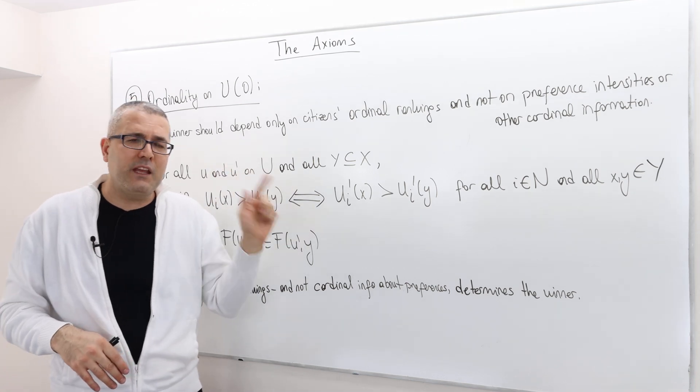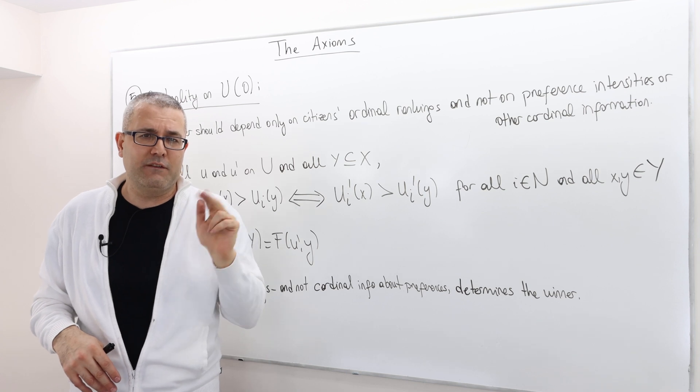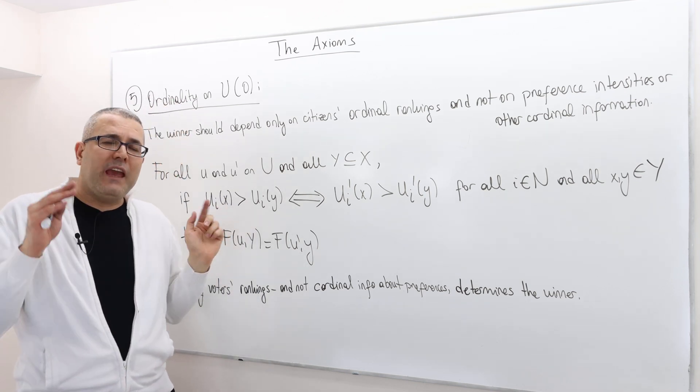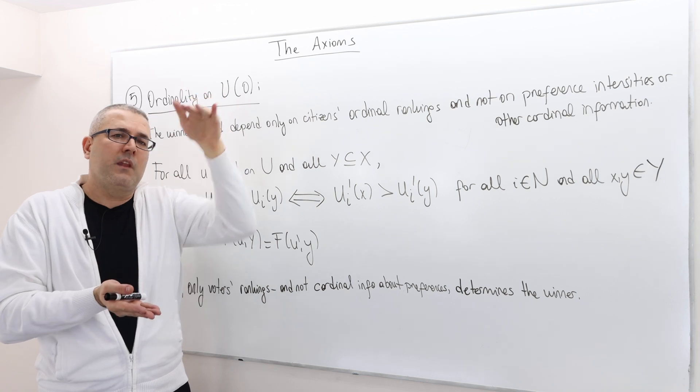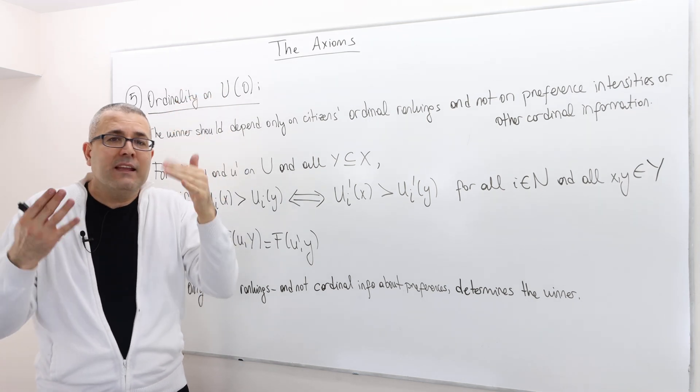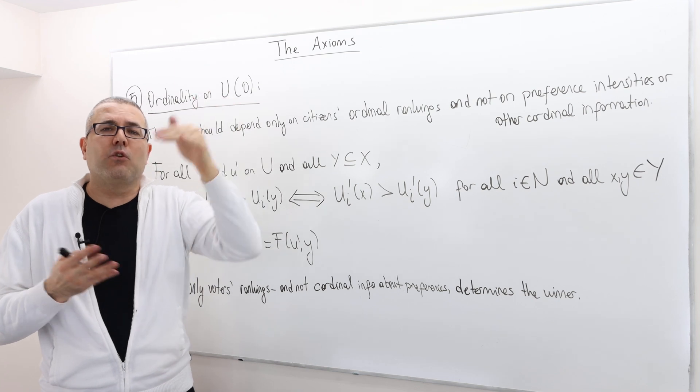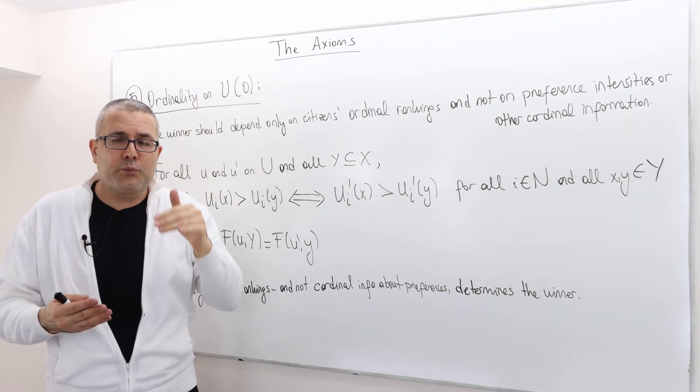So for every individual I and for any two alternatives X and Y, if Agent I ranks X over Y under U, well, he also ranks X over Y under U prime.